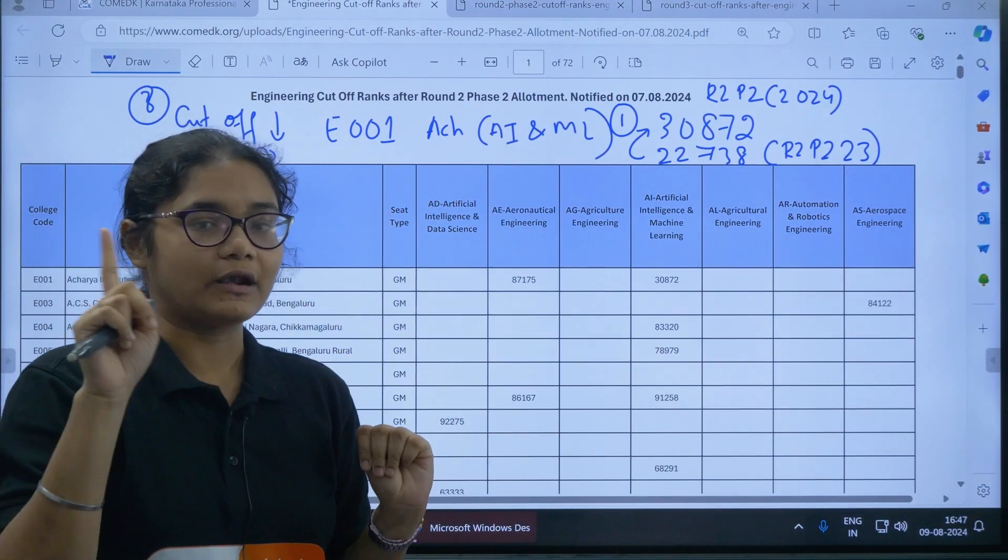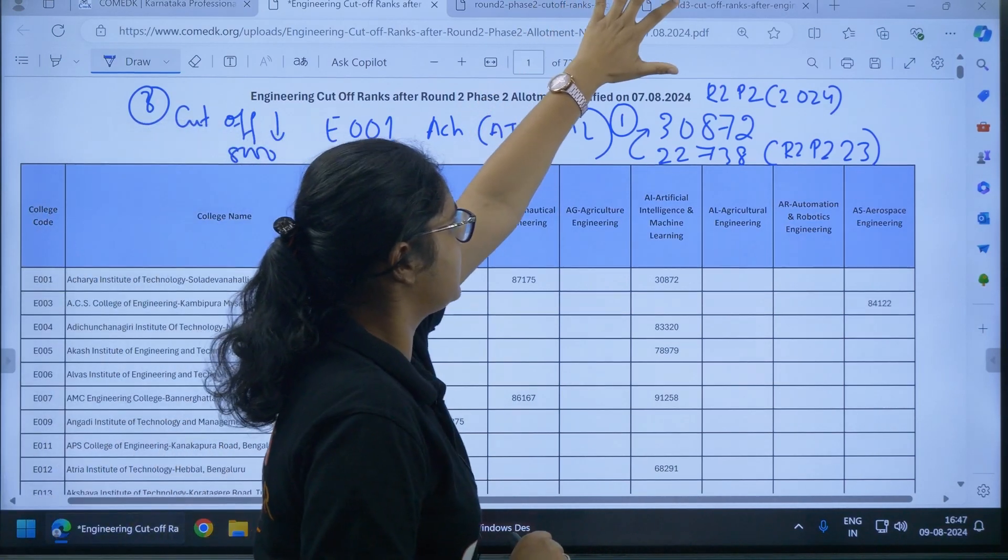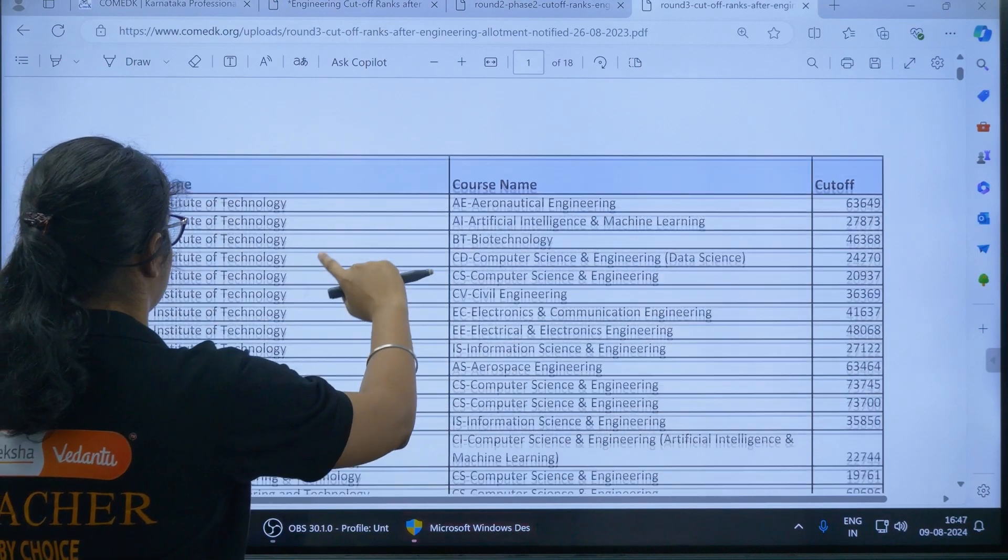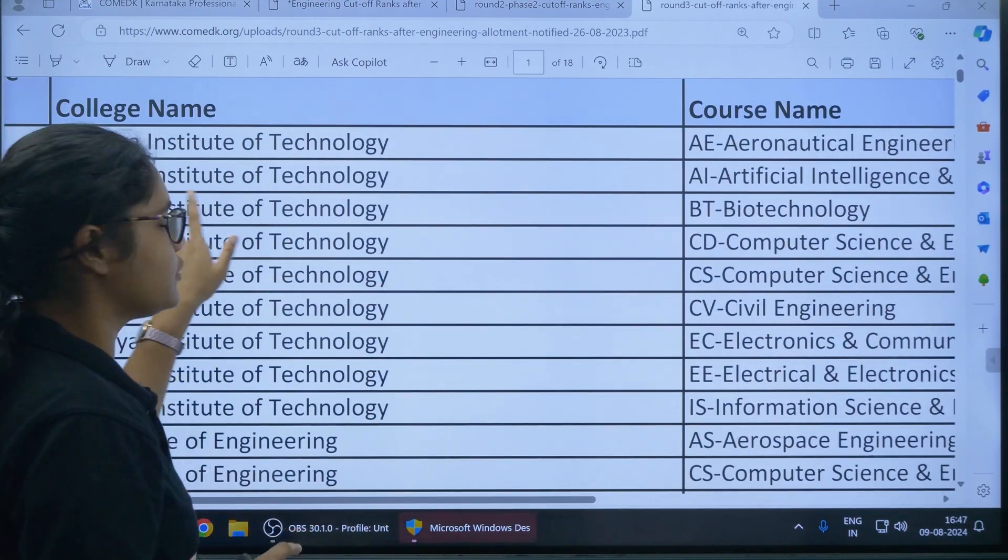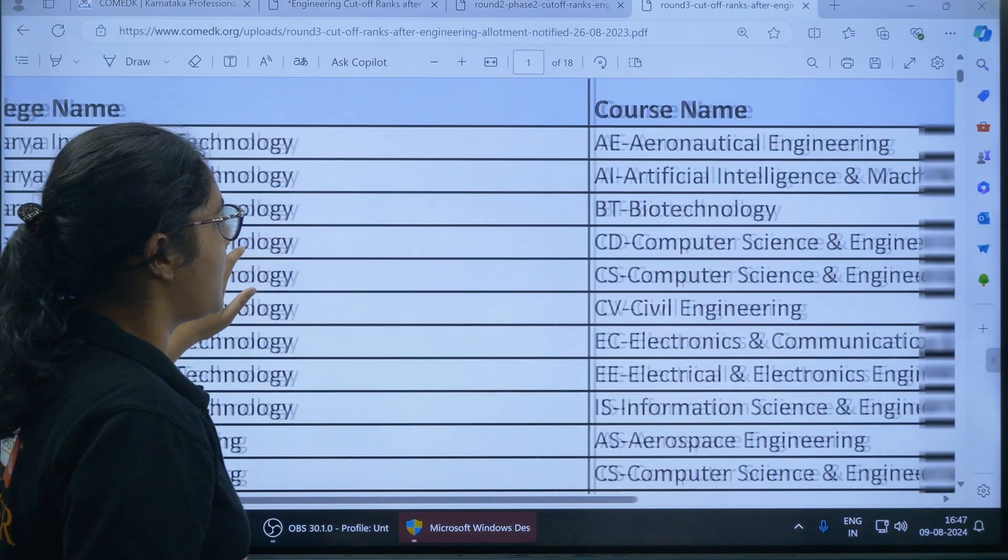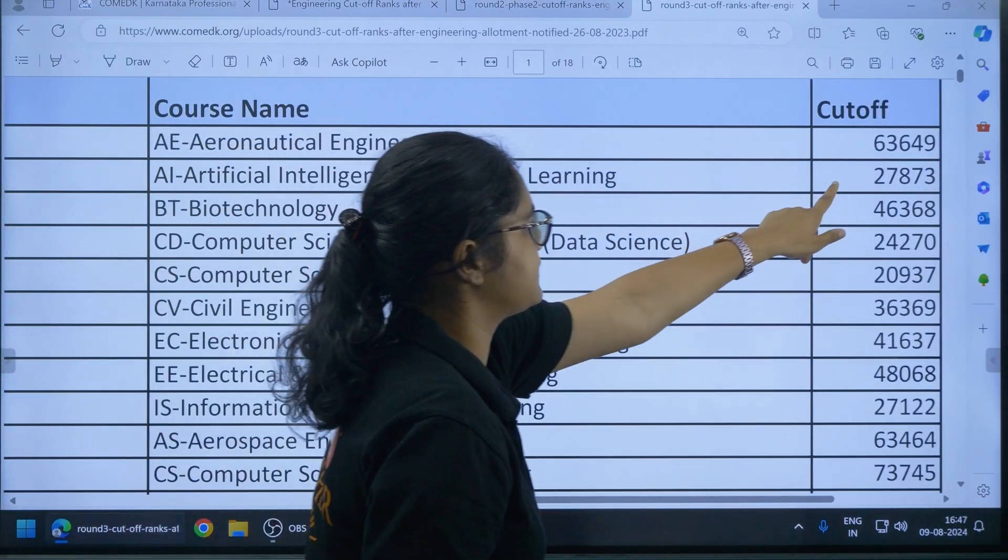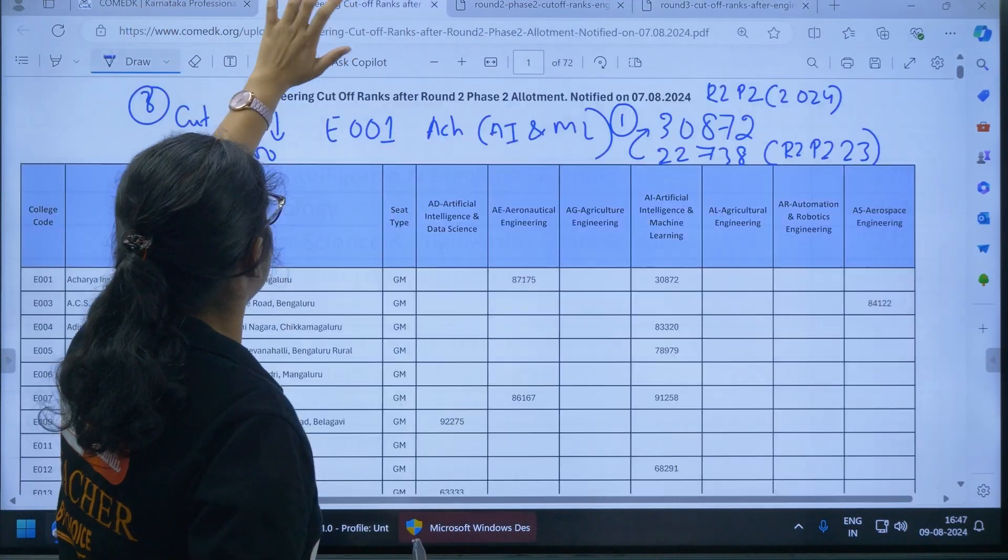Step 4, now go for Round 3 2023 cutoff. The link of this PDF will be there in the description section. Now if you see here, let me zoom it, you can see Acharya Institute of Technology, in Artificial Intelligence and Machine Learning, the cutoff here is 27,873 last year.